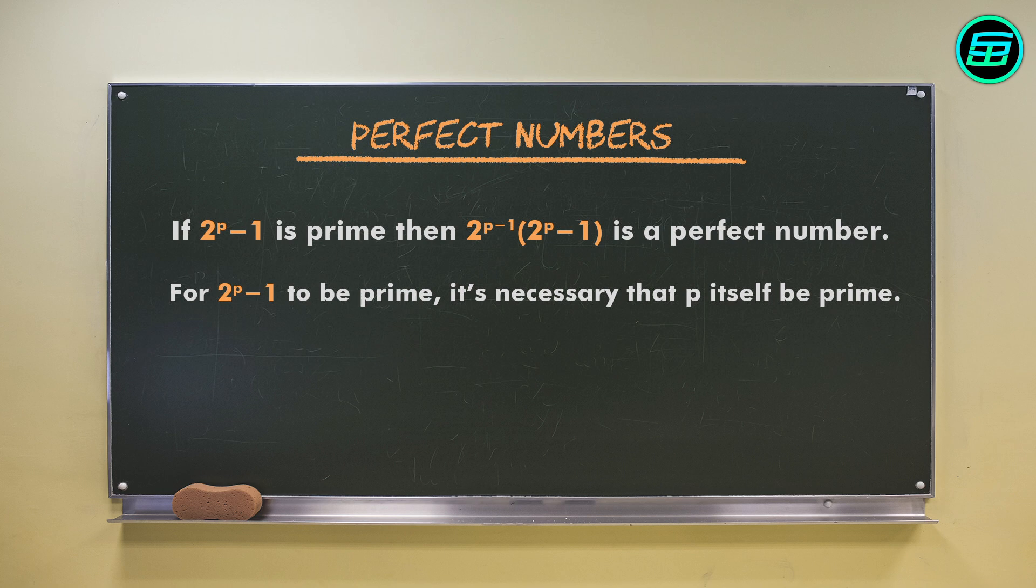Because of Mersenne's work, prime numbers of the form 2 to the p minus 1 are known as Mersenne primes. In the 18th century, Euler proved that the formula yields all the even perfect numbers.